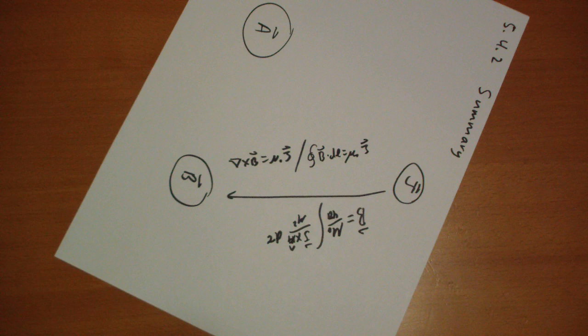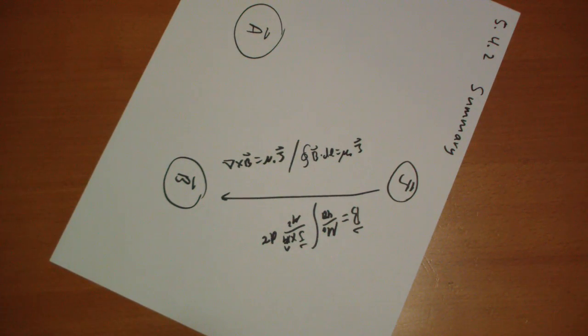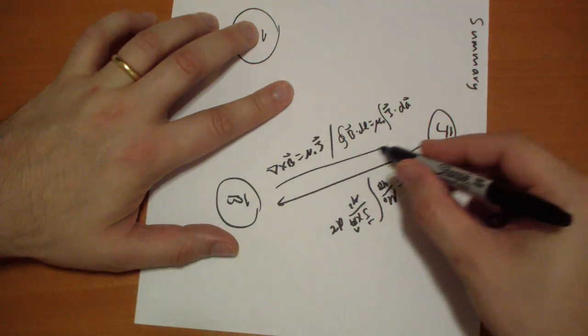I believe it's integral of B vector dot dL is equal to mu naught... I'm going to kill myself here. Let me go check in the book. Mu naught, oh, it's the integral of J dot dA I believe. Yeah, mu naught I enclosed integral of J dot dA.